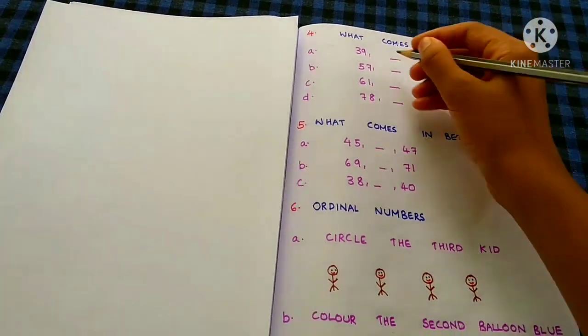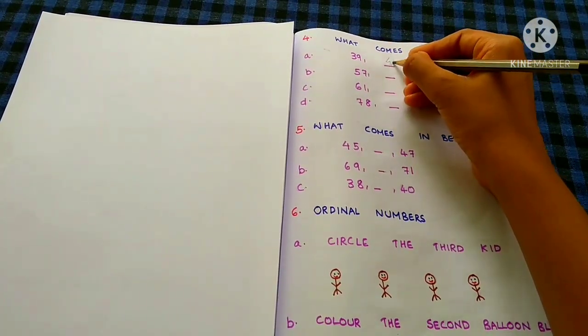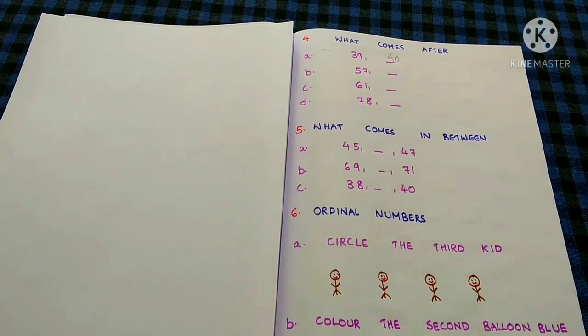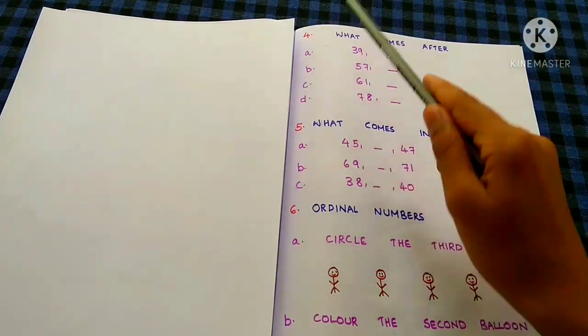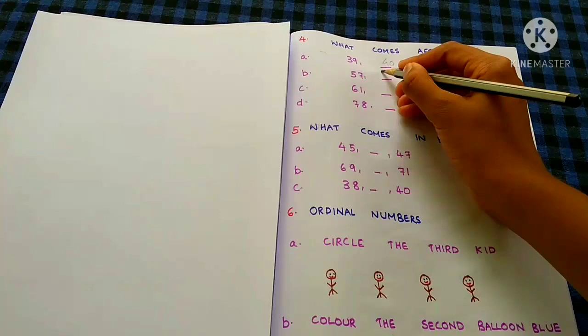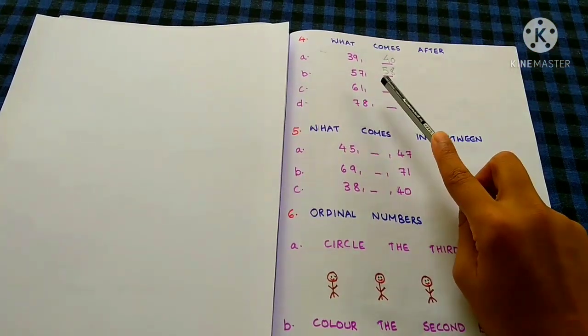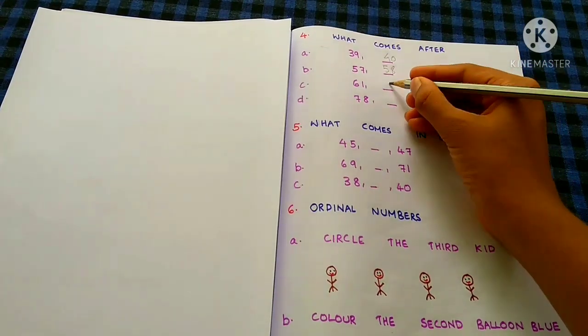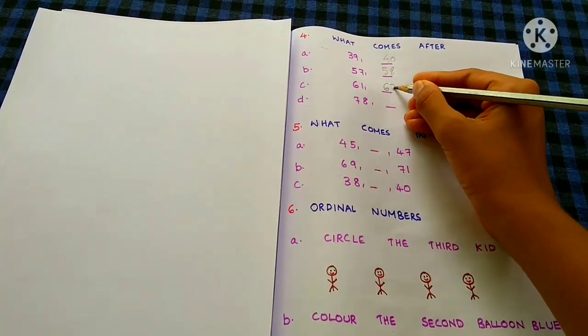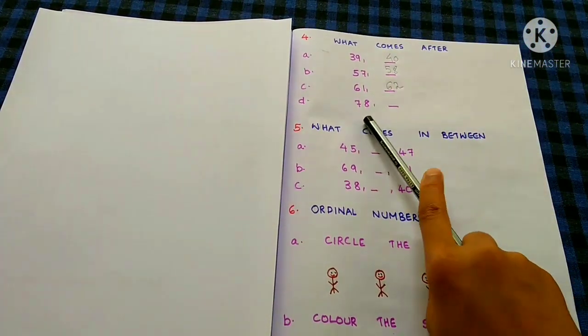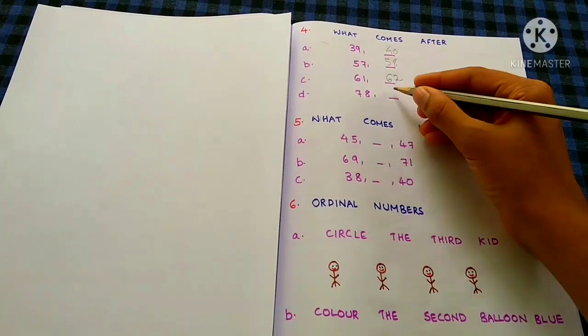What comes after 39? 40. 50? 57, 58. 61? 62. 78? 79.